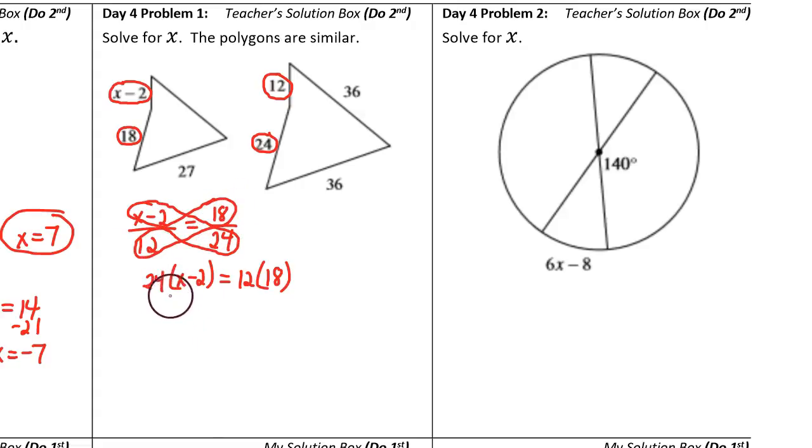Now we can do a distributive property. This is 24x minus 48 equals 216. Now add 48 to both sides.